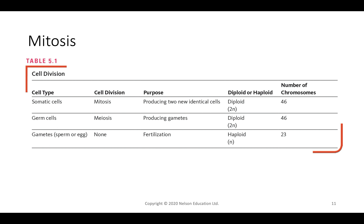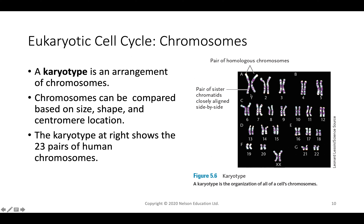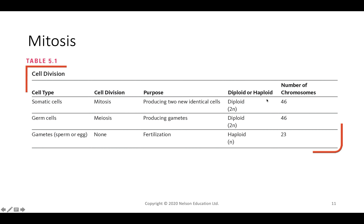In somatic cells, mitosis produces two genetically identical diploid cells — diploid meaning they have two copies of each chromosome. In contrast, sperm and egg cells are haploid, with only one copy of each chromosome. For example, the egg carries one X and the sperm carries either an X or a Y, but neither has two copies of each chromosome. Haploid cells are specific to sperm and eggs.